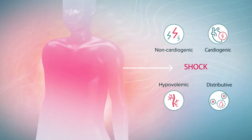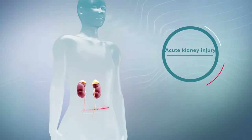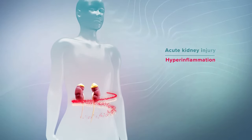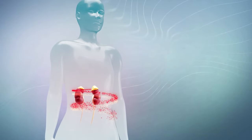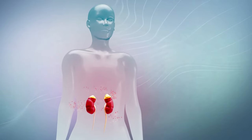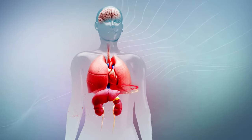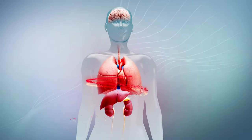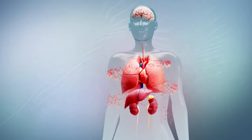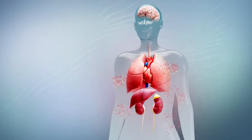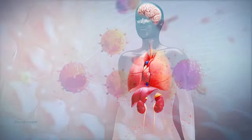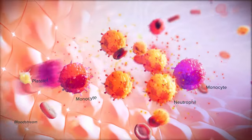The pathogenesis of acute kidney injury is associated with hyperinflammation, which, if uncontrolled, frequently progresses to other organs, like the heart and liver. The resulting multi-organ damage and potential failure contributes to significant morbidity and mortality.